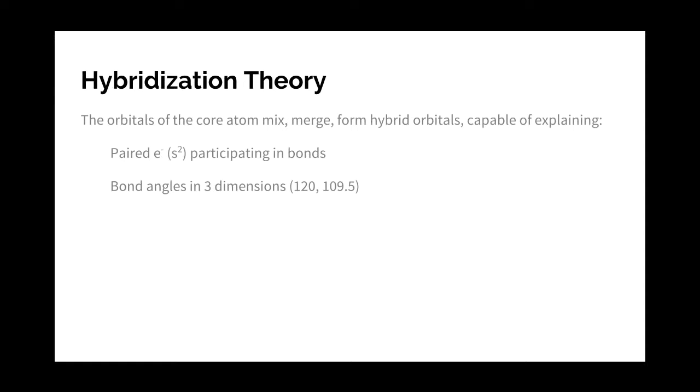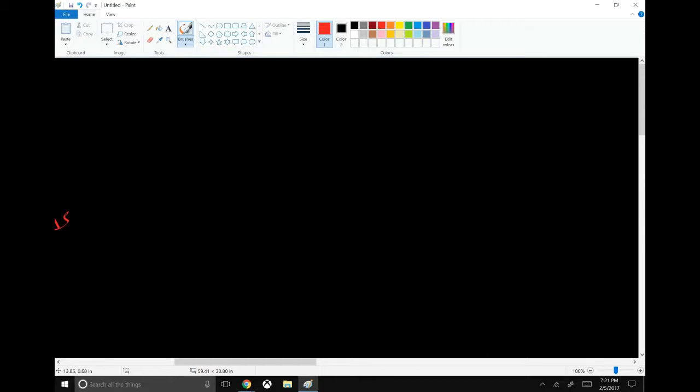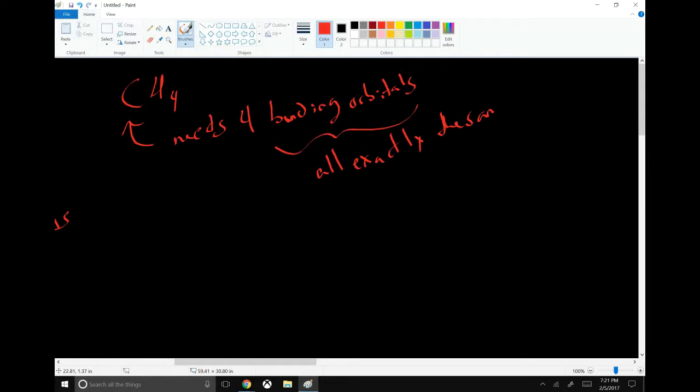So what hybridization says is that you form hybrid orbitals. For example, methane is carbon bound to four hydrogens. So carbon needs four bonding orbitals. Not only that, these bonding orbitals need to be all exactly the same, so that the four bonds, one with each hydrogen, are all exactly the same.